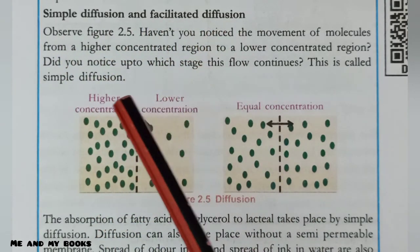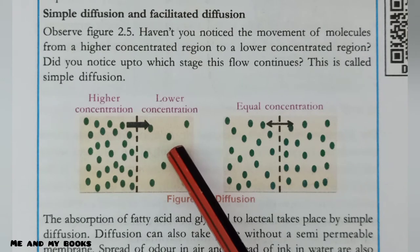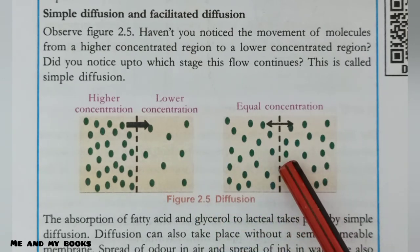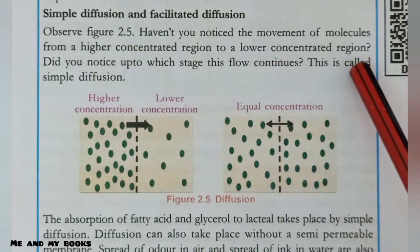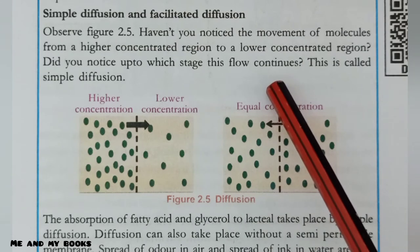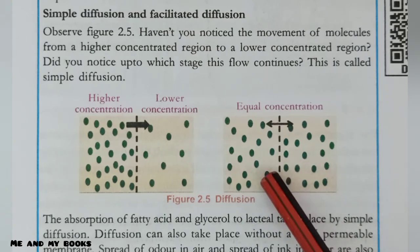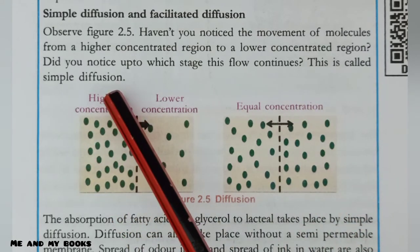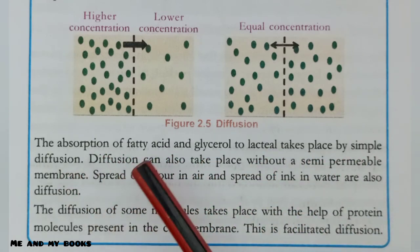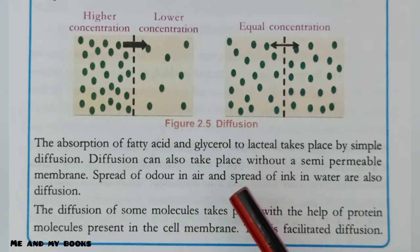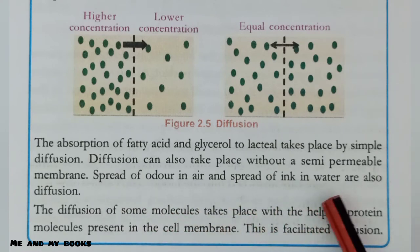Consider the difference between simple diffusion and facilitated diffusion. In simple diffusion, nutrients or molecules move from the higher concentration area to the lower concentration area without any protein molecules. The absorption of fatty acid and glycerol into the lacteal takes place by simple diffusion. Diffusion can also take place without a semi-permeable membrane — spread of odor in air and spread of ink in water are examples of diffusion.